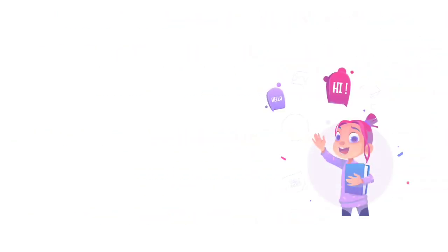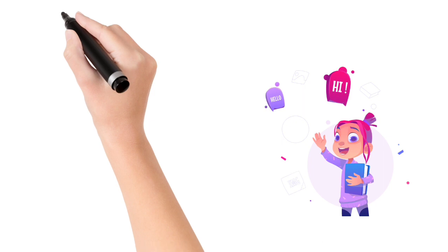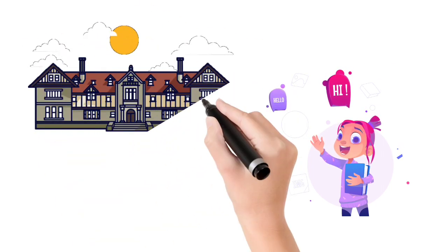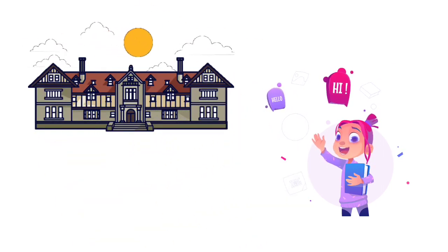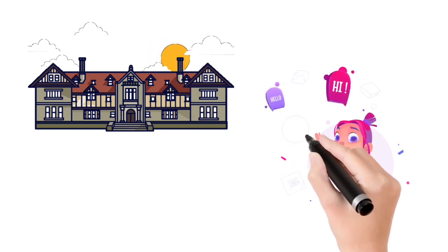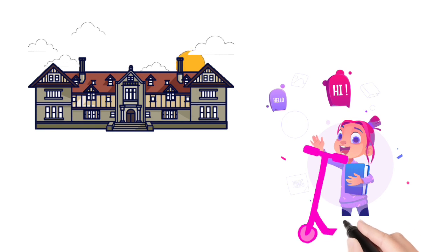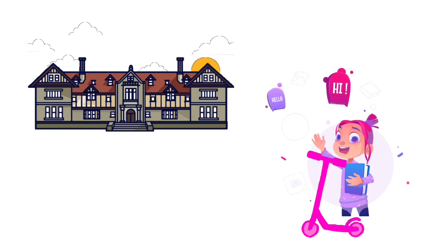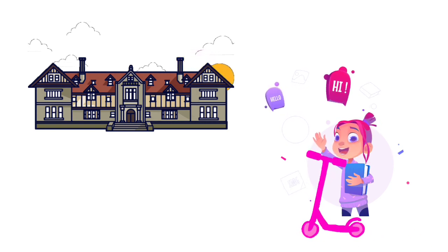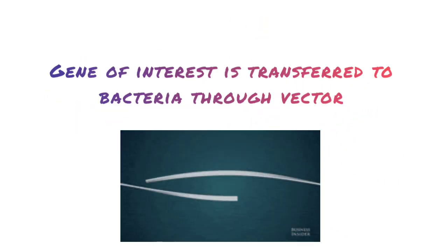To understand the vector, let's take an example. She is Toshiva and she wants to go to her school, but the road to her school is not that good, so she can't go there by walking. For that she needs a vehicle. Now she can go to school very easily in vehicle. The concept is quite similar here - our gene of interest is transferred to bacteria through vector.